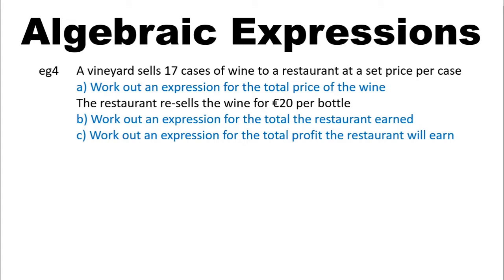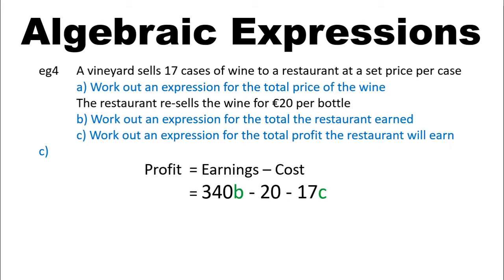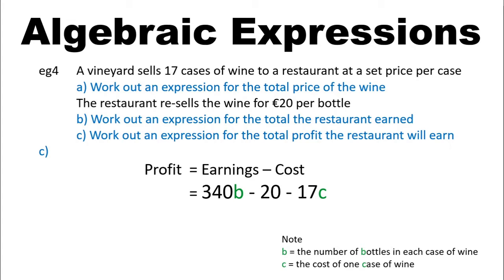Part C asks us to write an expression for the total profit the restaurant will earn. Profit is the amount of earnings minus the cost of making those earnings. That would be 340B minus 20 minus the 17C that they spent on the cases of wine. Now, these variables are not like terms — they're not the same letter and don't represent the same values, so we cannot group them together. Always make sure your variables are clear: B was the number of bottles in each case, and C was the cost of one case of wine.